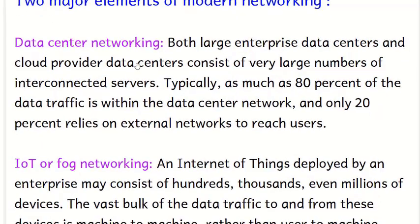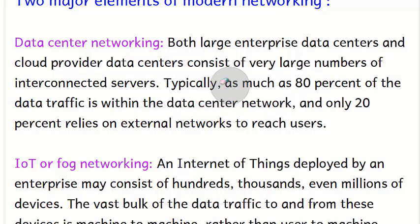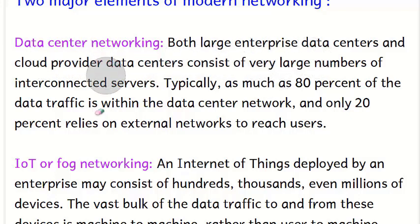Now we look at the two major elements of modern networking. The first is data center networking. Both large enterprise data centers and cloud providers consist of a very large number of interconnected servers, through which a tremendous amount of data is passed. Typically, as much as 80 percent of data traffic is within the data center network itself, with only 20 percent going to external networks to reach users.